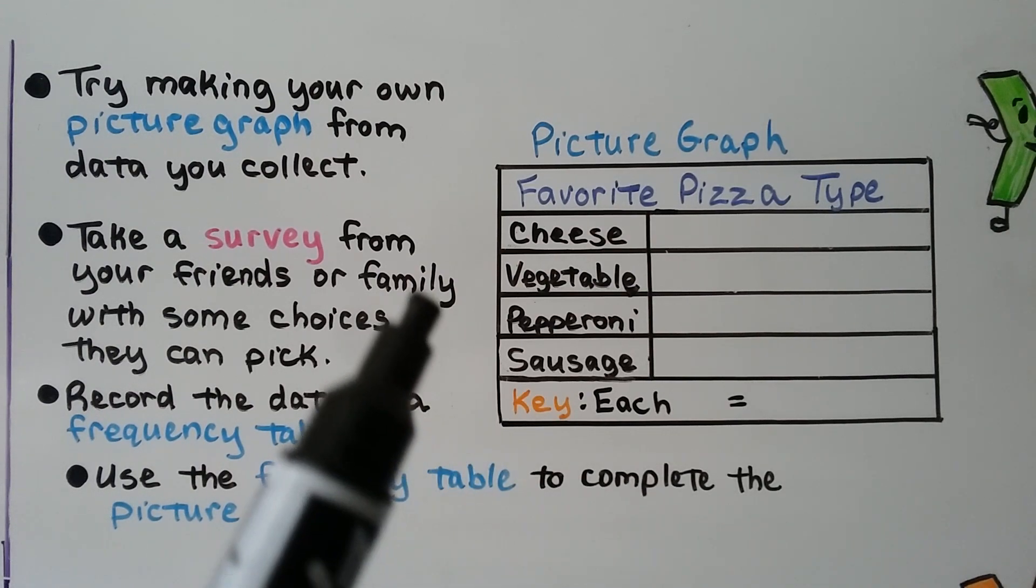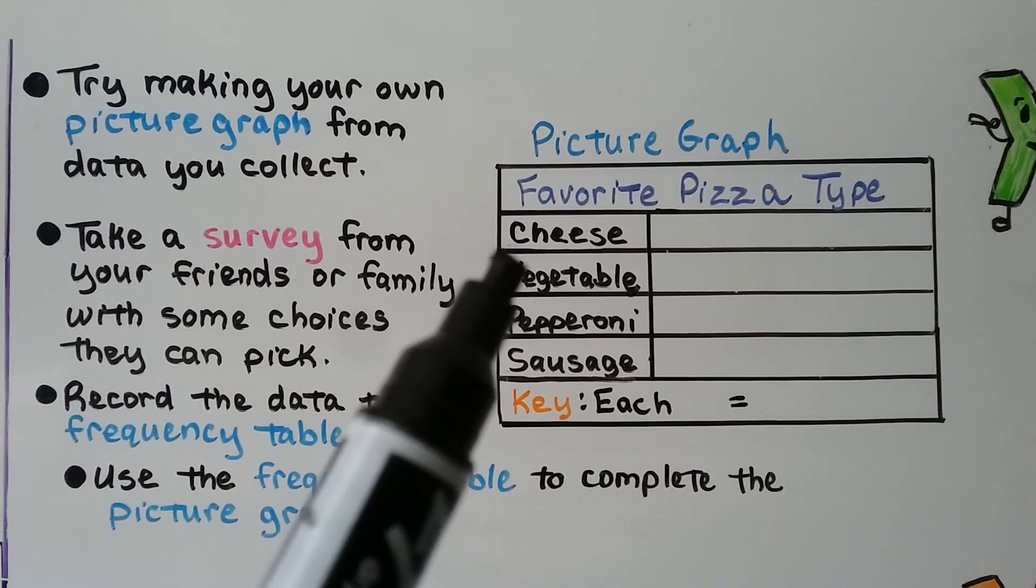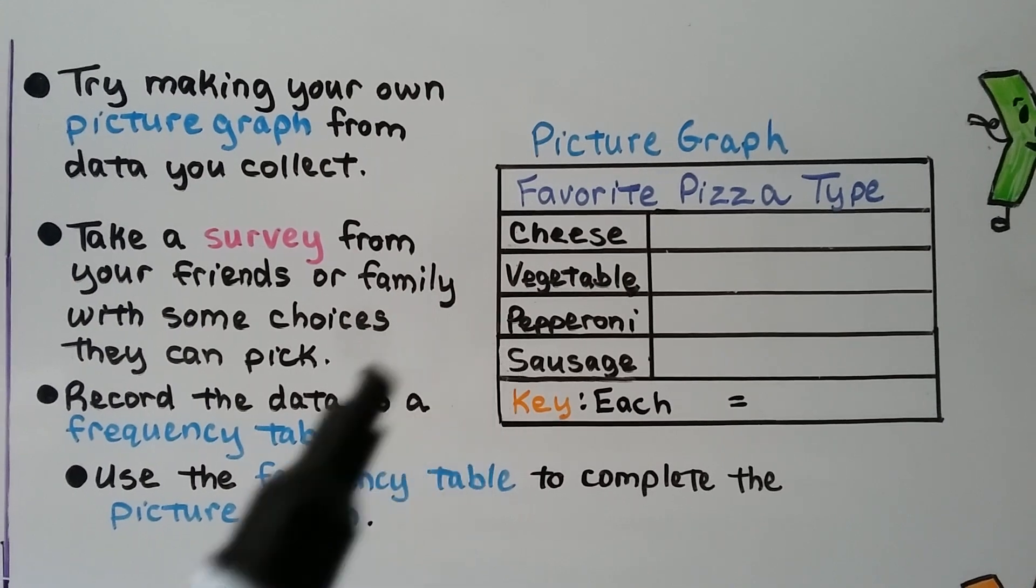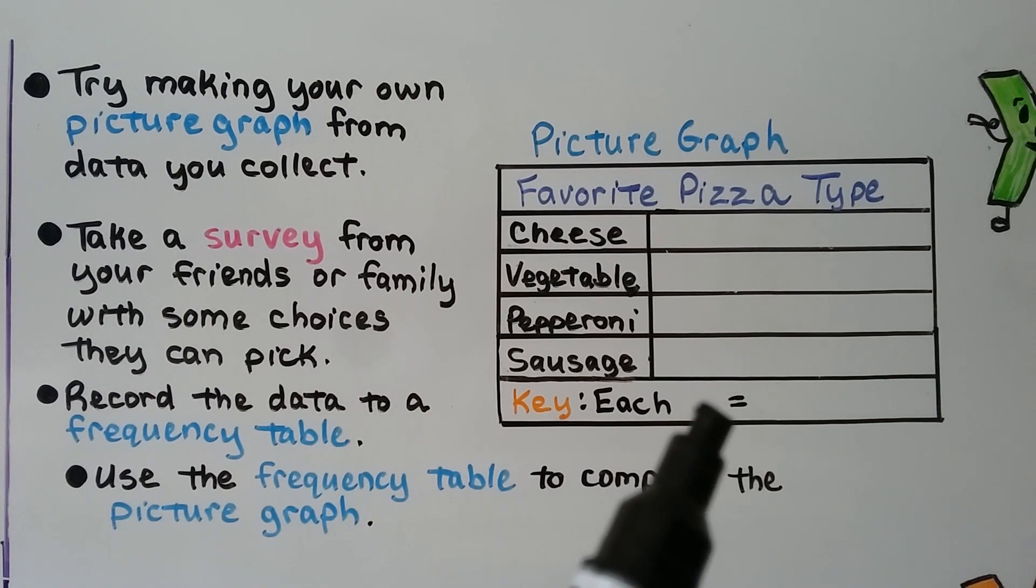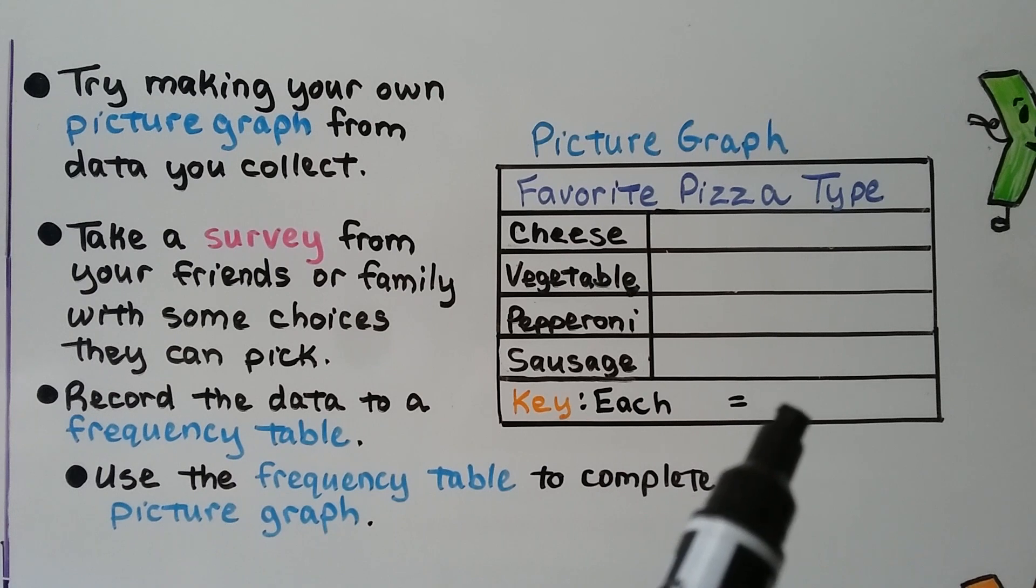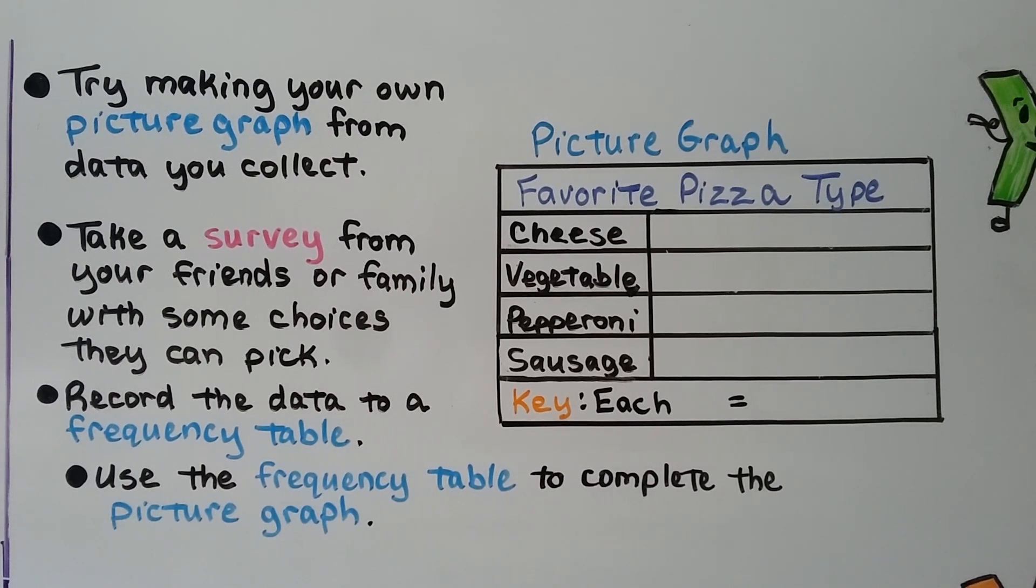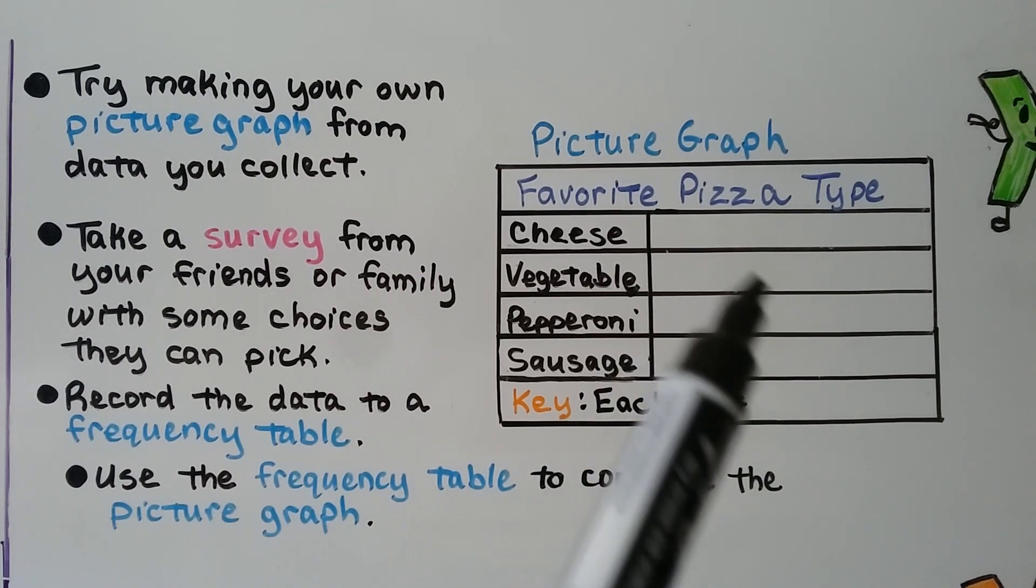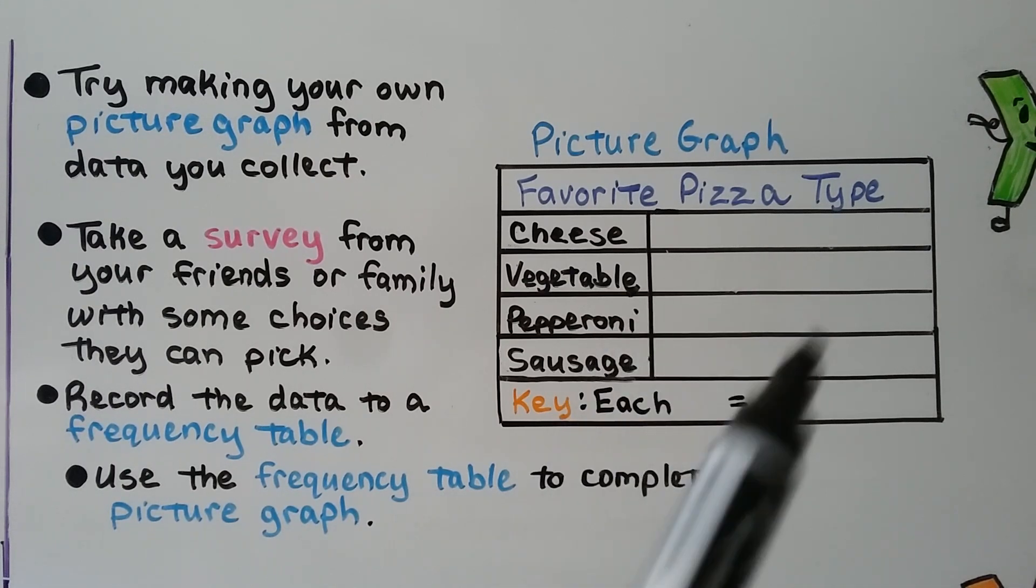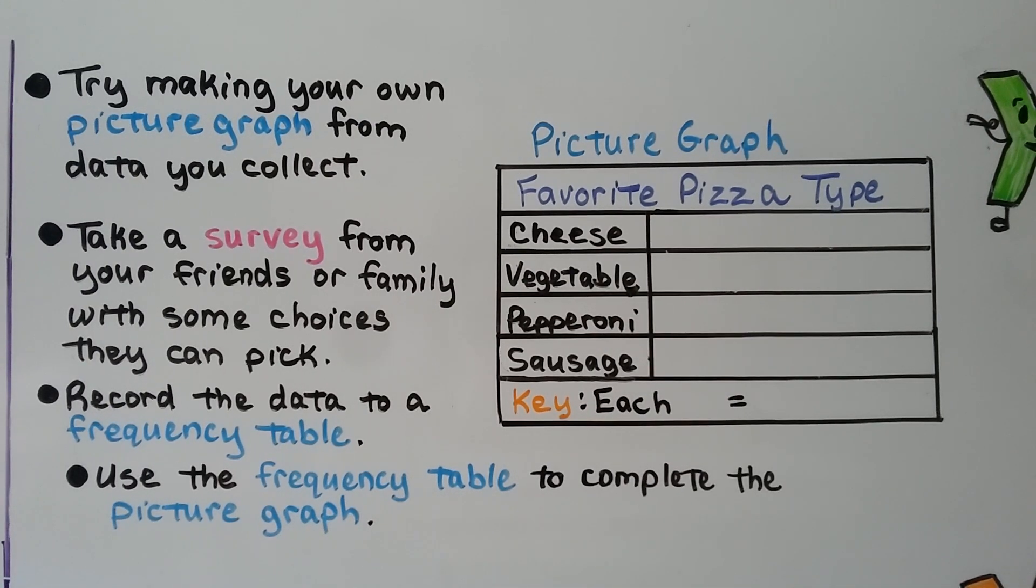You could ask your friends and family what their favorite pizza type is. You can ask: do they like cheese, vegetable, pepperoni, sausage? And you can have a symbol or picture and write in the key what each symbol or picture represents, what number it is equal to. Then put your symbols or pictures according to how many in that area there.